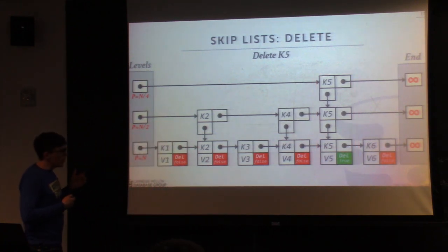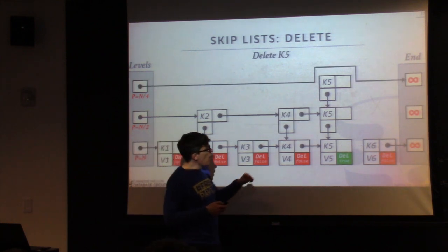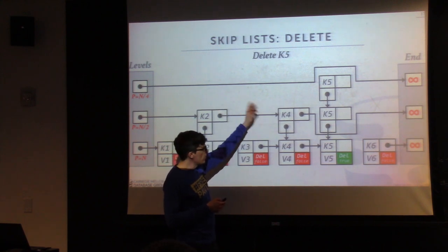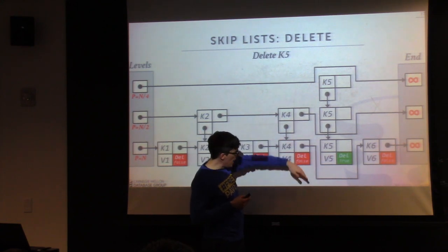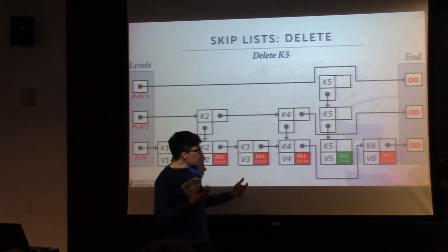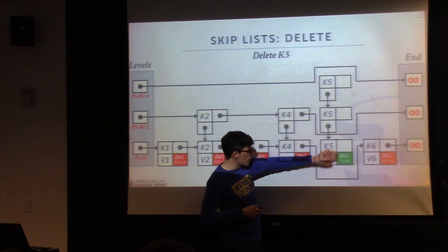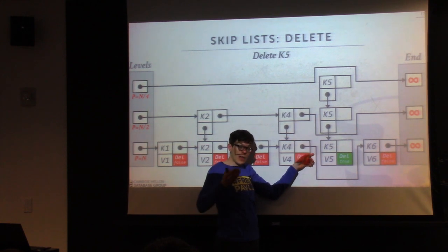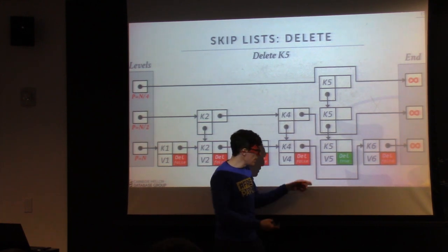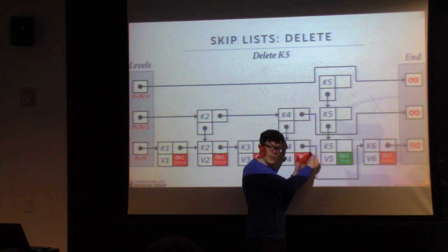At some later point, once we know no other thread is looking at this node — through the garbage collection mechanism — we can go ahead and do compare-and-swap to remove these pointers, going from the top down to now point to the entry that comes around it. A thread could still be sitting at our node, so we need to make sure they're gone when we actually do the free and remove it. But it's safe for us to go ahead and update these pointers with CAS. If someone else has updated a pointer before we did — like inserting a new entry between us and our successor — we may need to redo the search and find where we should actually be pointing.